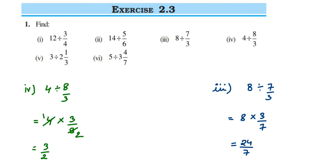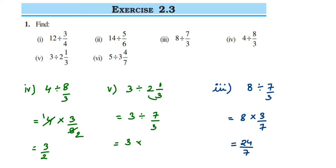Fifth one: 3 divided by 2⅓. Here we have a mixed fraction, so first we convert it to an improper fraction. 2 times 3 is 6, plus 1 is 7, so it becomes 7/3. Now divide: 3 divided by 7/3. Division becomes multiplication; take the reciprocal of 7/3, which is 3/7. Can we cancel? No. So multiply: 3 times 3 is 9, giving 9/7.